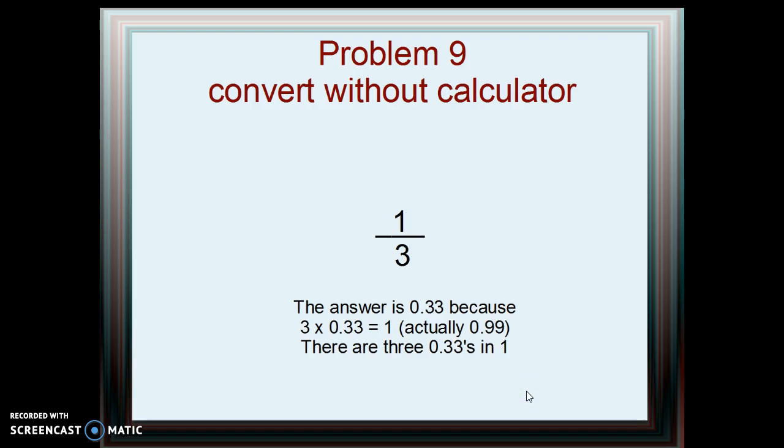One divided by 3: the answer is 0.33 because 3 times 0.33 equals 1. This is like that company that sells 3 bags for $10, and it really comes out to $9.99. So there are three 0.33's in 1.